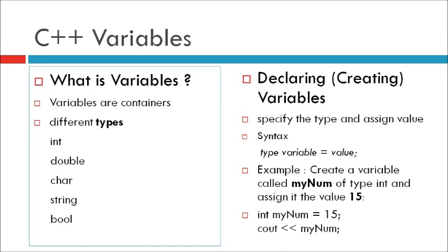Declaring or creating variables. To create a variable, you must specify the type and assign it a value. Syntax: type variable equals value, semicolon, where type is one of C++ types such as integer.